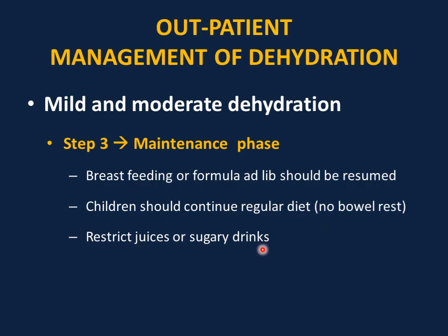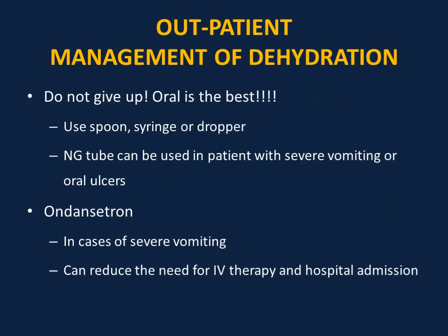Restrict juices and sugary drinks, which may worsen diarrhea and cause electrolyte disturbances due to high osmolarity and inappropriate sugar-to-salt ratios. Do not give up on oral rehydration — it is much preferred over IV fluid. Use a spoon, syringe, or dropper. A nasogastric tube can be used in patients with severe vomiting or oral ulcers such as in herpangina. Ondansetron (Zofran) or other antiemetics can be used in cases of severe vomiting, reducing the need for IV therapy and hospital admission.